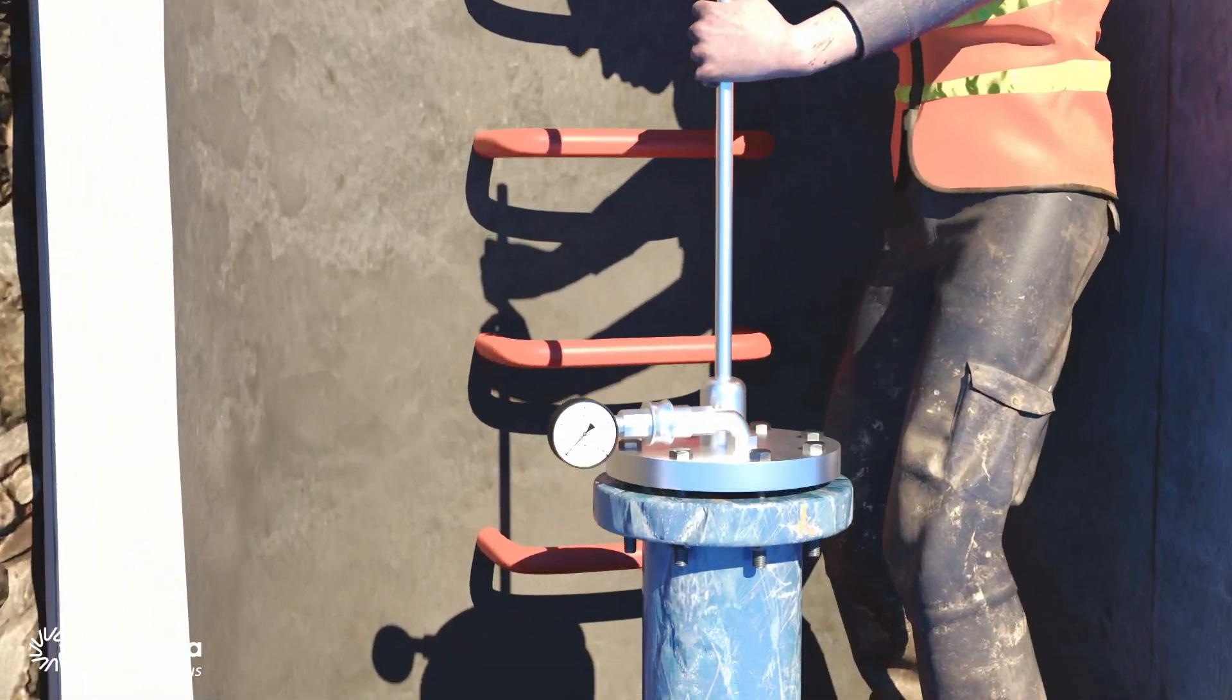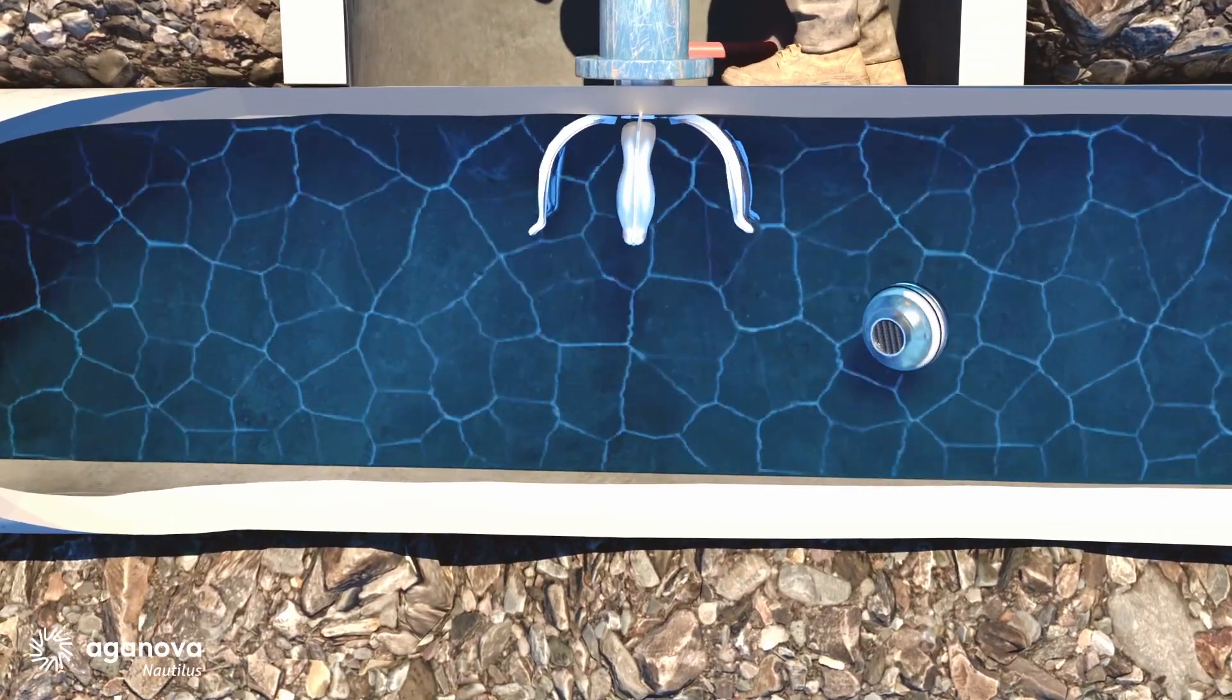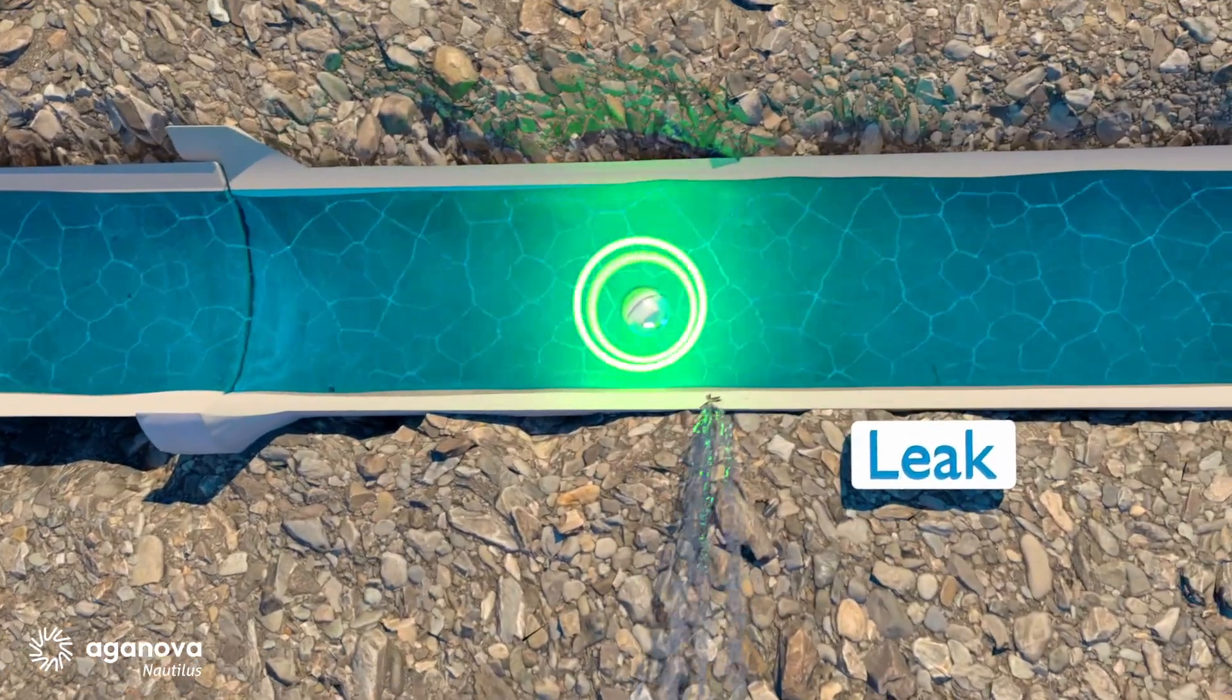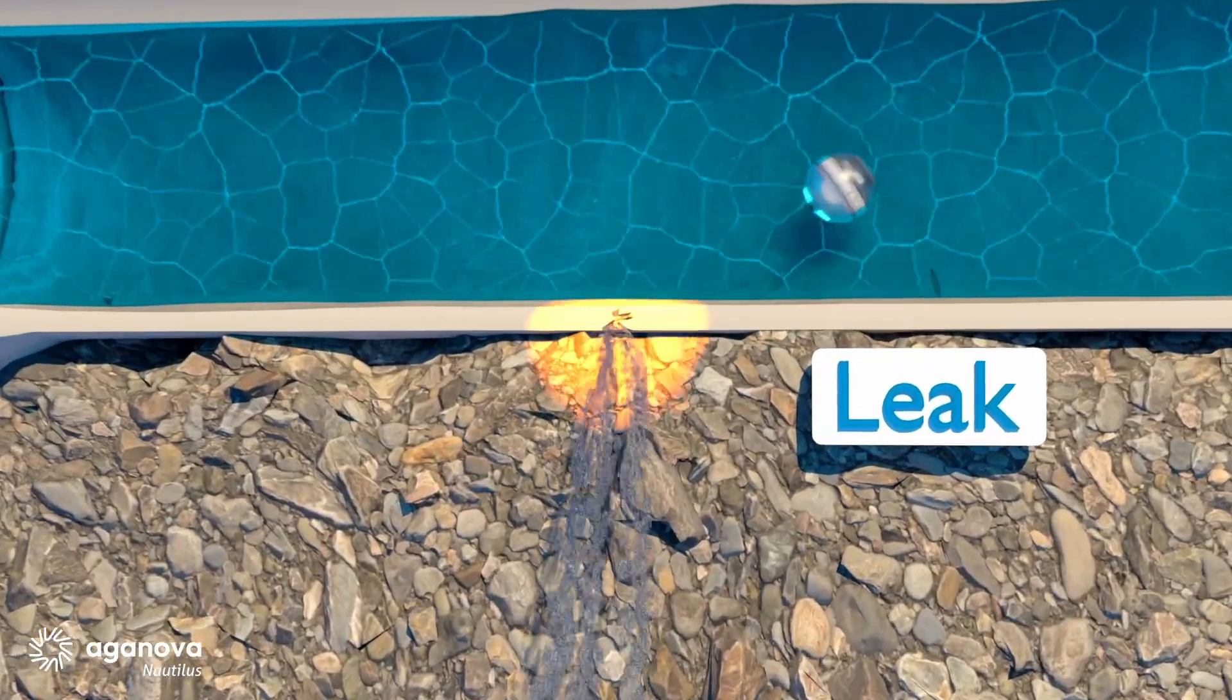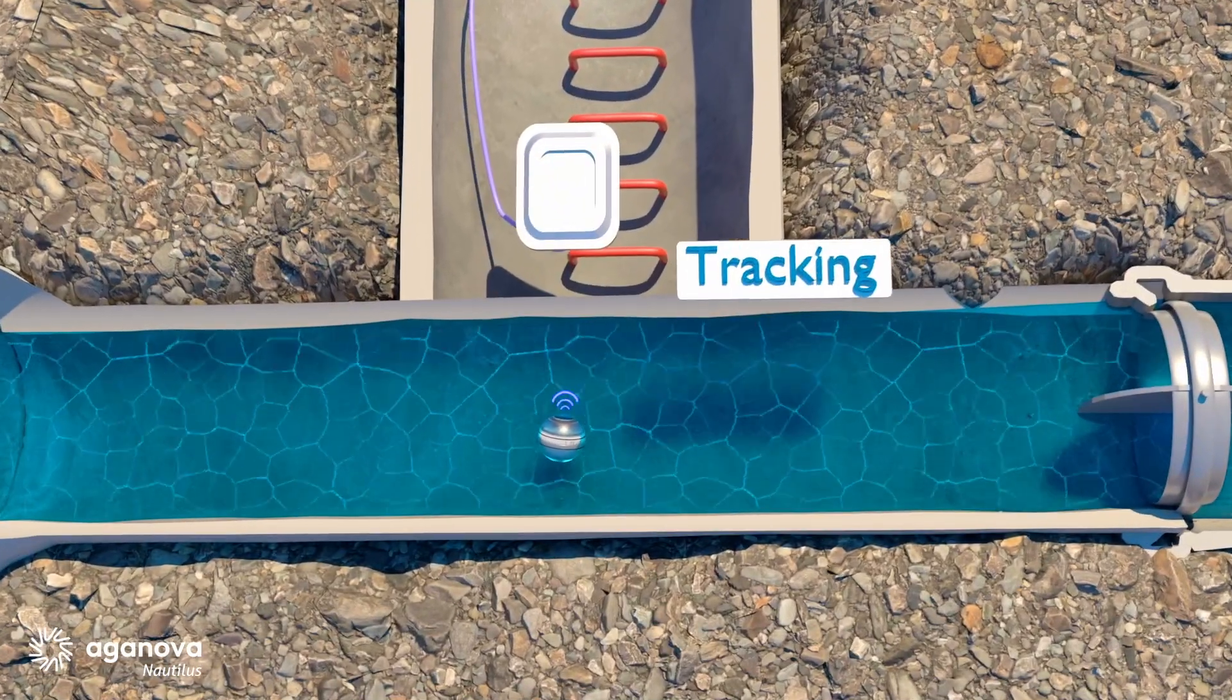The process begins with the insertion of Nautilus into the pipeline. Its neutral buoyancy strategy allows it to navigate smoothly, overcoming obstacles while detecting acoustic anomalies as it moves.